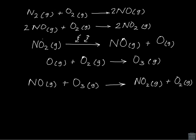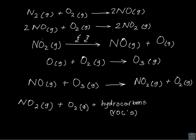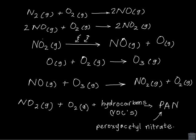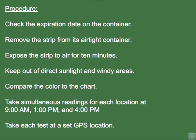Another key component is formed by an interaction between nitrogen dioxide, oxygen, and hydrocarbons or VOCs — volatile organic compounds — and these, in the presence of sunlight, produce PAN, a powerful eye irritant. Let's take a look now at the procedure for today's experiment.